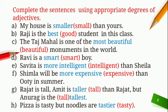Rajat is tall. Amit is dash than Rajat. But Anurag is the dash tall. In the first blank, the comparison is between Amit and Rajat, so 'taller' will come. In the next blank, Anurag is compared with Rajat and Amit, so 'tallest' will come. The answer will be: Rajat is tall. Amit is taller than Rajat. But Anurag is the tallest.